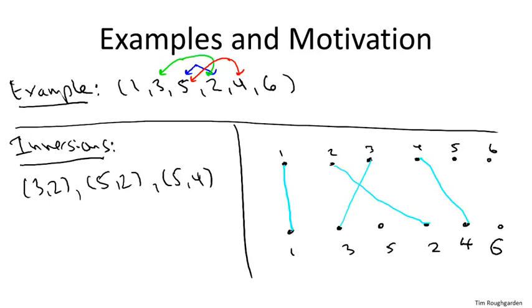Now, it turns out, and I'll leave it for you to think this through, that the number of crossing pairs of line segments precisely correspond to the number of inversions. So we see that there are one, two, three crossing line segments, and these are exactly in correspondence with the three inversions we found earlier: five and two, three and two, and five and four.